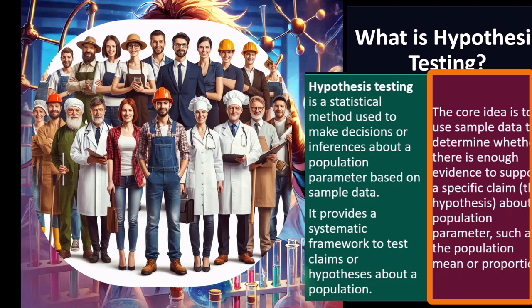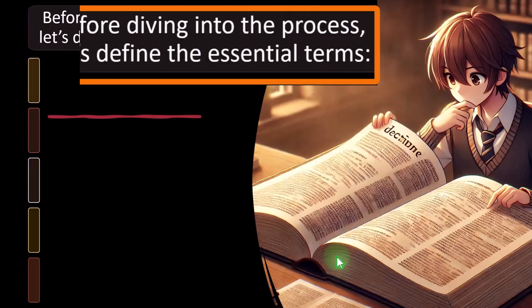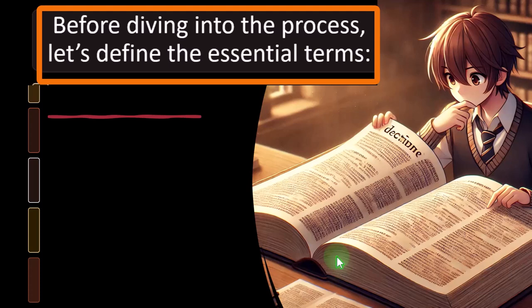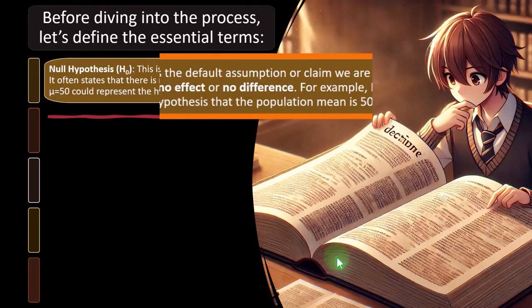The core idea is to use sample data to determine whether there is enough evidence to support a specific claim — the hypothesis — about a population parameter such as the population mean or proportion. Often we're looking at the mean of whatever data we're examining: what's the average height, the average length of a worm, or the average number of widgets in a machine-produced box?